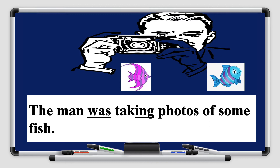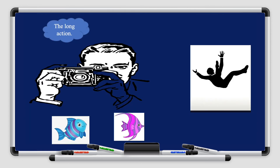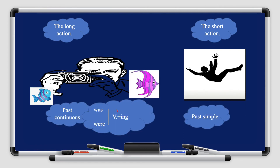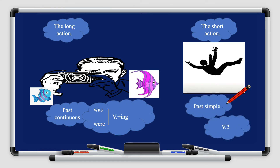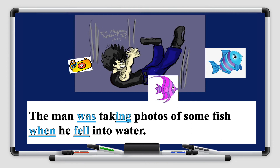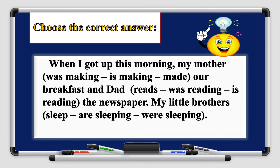Another example: 'The man was taking photos of some fish. He fell into the water.' The long action is 'taking pictures'; the short action is 'he fell.' For the long action we use the past continuous tense — 'was/were' with verb plus -ing. Merged: 'The man was taking photos of some fish when he fell into the water.' Pay attention — 'when' is in the middle of the sentence, so we do not use a comma.